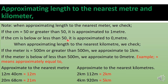For kilometers: if the meters are 500 or greater than 500, we approximate to one kilometer. If the meters are below or less than 500, we approximate to zero kilometers. The symbol '≈' means approximately equal to.